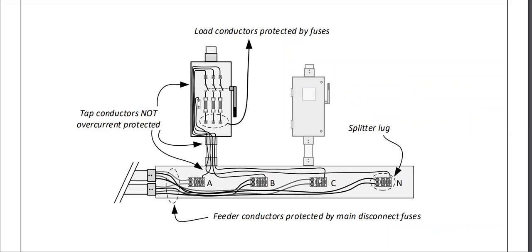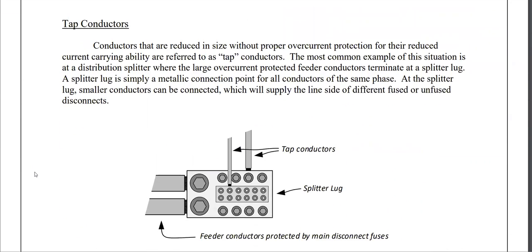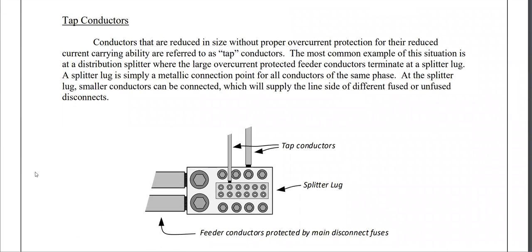We can see that we've got A, B, C, and a neutral terminating in this disconnect. The top side is the line side of the disconnect, not the bottom. Conductors that are reduced in size without proper overcurrent protection for the reduced current-carrying ability are referred to as the tap conductor. The most common example is at the distribution splitter, where a large overcurrent-protected feeder conductor terminates at the lug — simply a metallic connection point for all conductors of the same phase. Smaller conductors can then be connected to supply the line side of the different fused or unfused disconnects.